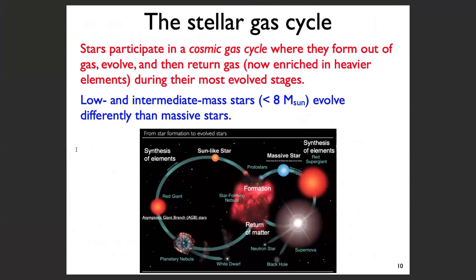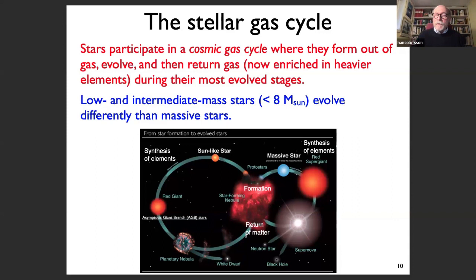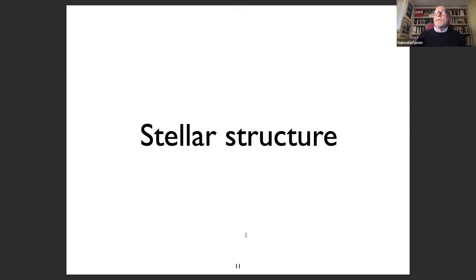Stars are part of a cosmic gas cycle. They form out of gas, they evolve, and then they return the gas — now enriched in heavier elements — during their most evolved stages. Low and intermediate mass stars, those with mass less than about eight solar masses, evolve slightly differently than massive stars. The synthesis of elements takes place in the stars, and when the stars die, they return this matter, which is enriched in heavier elements.